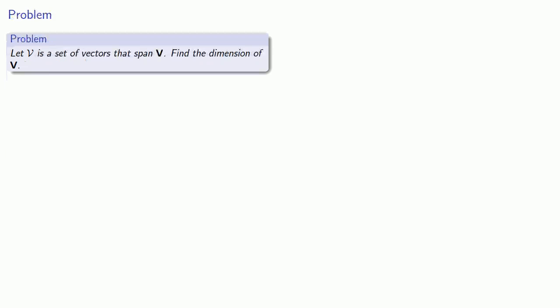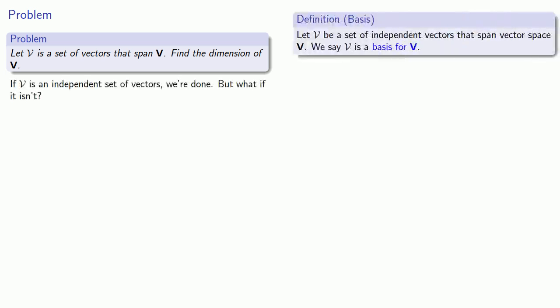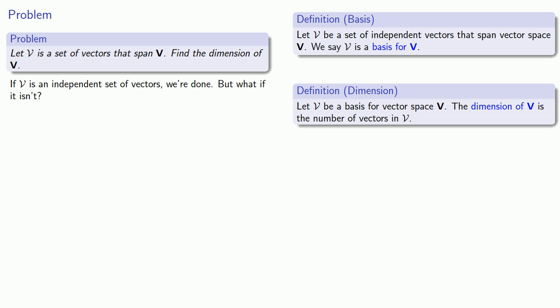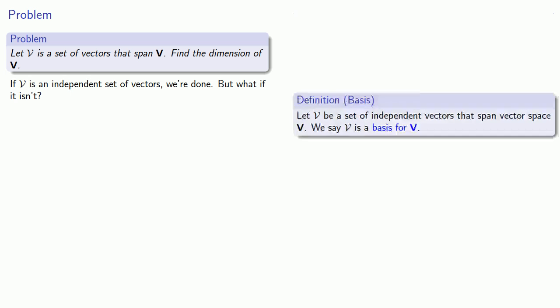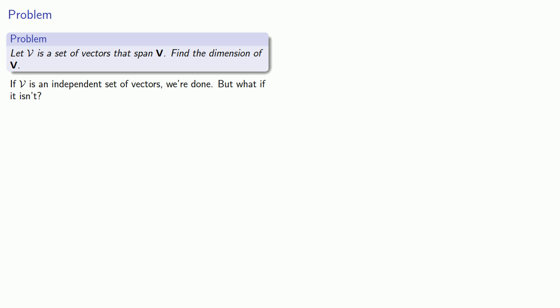So again, every good definition leads to a problem. Let V be a set of vectors that span the vector space v. If V is an independent set of vectors, we're done, because then V is a basis and the dimension is the number of vectors in the basis. But what if my set of vectors is not independent? I'll have to figure out which vectors are redundant.